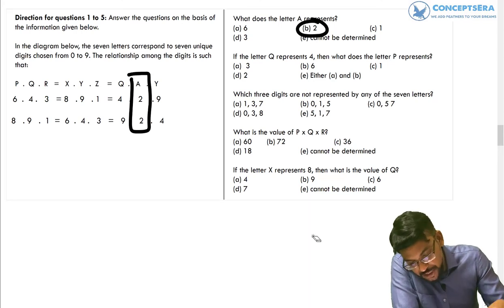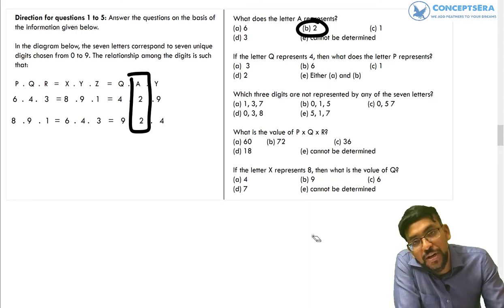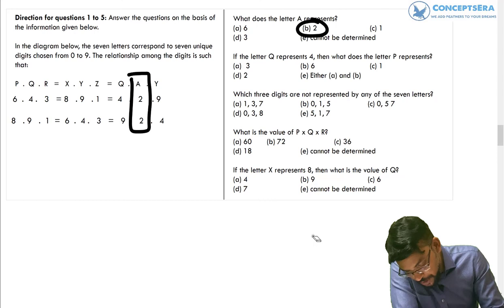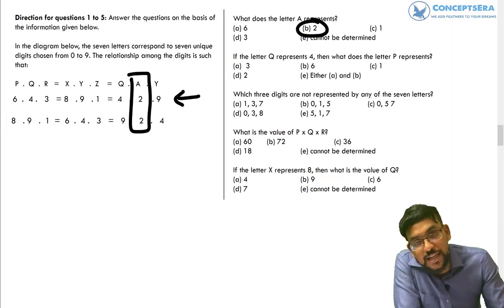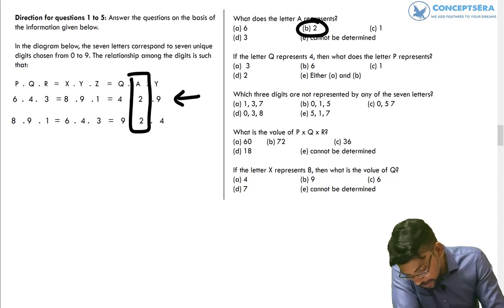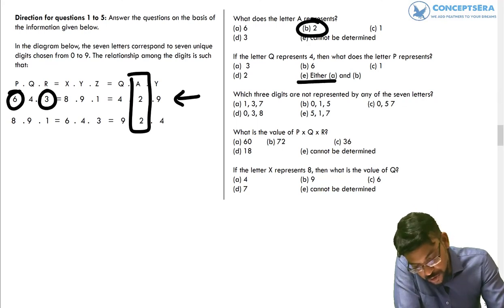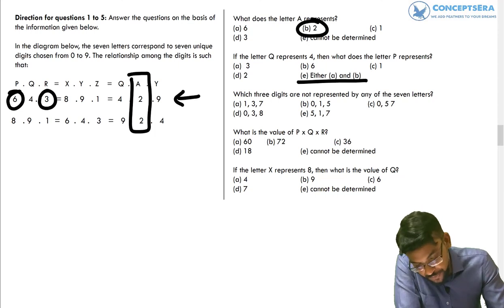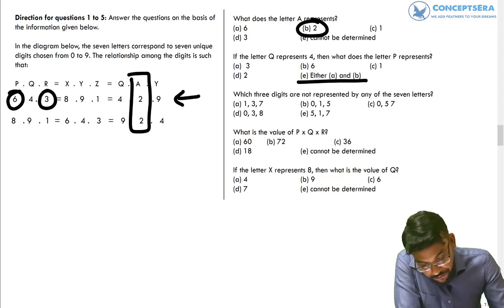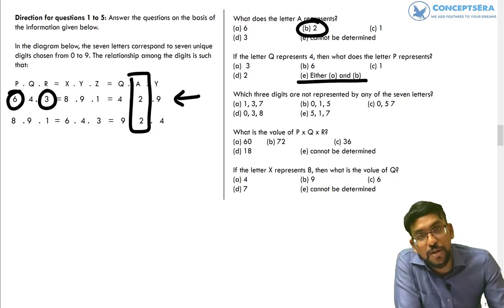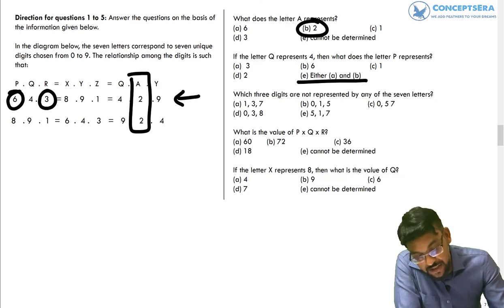The second question states: if letter Q represents 4, what is P representing? When Q is 4 we are in the first case, and P can be 3 or P can be 6, so the answer is E — either A or B. The third question asks which three digits are not represented by any of the seven letters. We know the answer is C: zero, five, and seven.